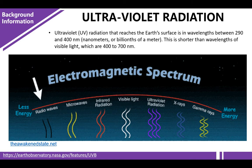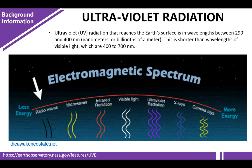Ultraviolet radiation from the Sun that reaches the Earth's surface is in the wavelengths between 290 and 400 nanometers. This is shorter than the wavelengths of visible light, which range from 400 to 700 nanometers. As you can see in this electromagnetic spectrum diagram, this is where ultraviolet radiation is located.